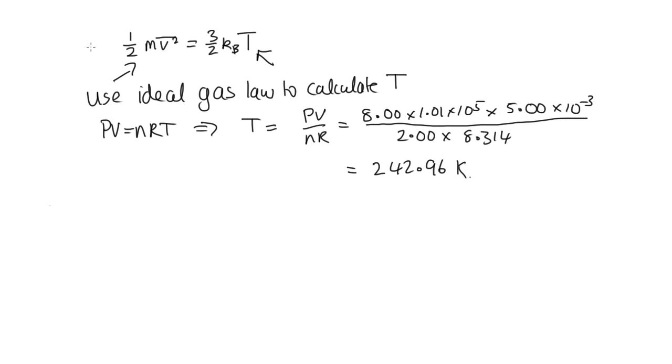And now we can just substitute it back into this equation here. So we've got our average kinetic energy is equal to 3 over 2 times kB, which is 1.381 times 10 to the minus 23, times 242.96.